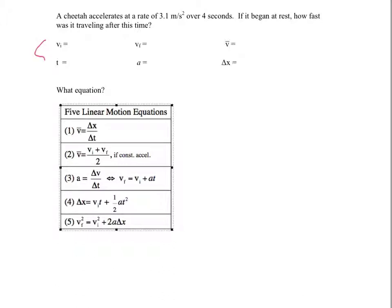Three of them are velocities, all labeled v. So there's vi, vf, and v with the bar over it, which means average. So vi is your starting, vf is your final, v bar is your average. t is your time, a is your acceleration, and delta x is your displacement.